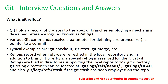What is git reflog? Git holds a record of updates to the tips of branches using a mechanism called reference logs, also known as reflogs. Whenever we execute Git operations it always maintains references and a history audit trail — that is called reflog. It is typically recorded when we do git checkout, git reset, git merge, and similar commands.